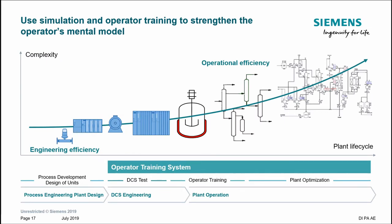Operator training can eliminate thinking errors as well. It wouldn't be a Siemens presentation without mention of a digital twin, so this is a good point to mention SIMIT. In SIMIT you can create a model of your plant to simulate it in extreme conditions. This is a really effective tool because it allows operators the chance to train on a simulation of the plant and experience unexpected events, so when they're on the real plant it's not the first time they've encountered them.